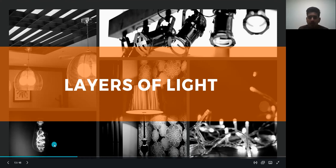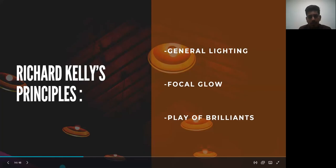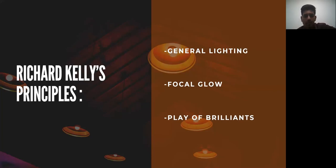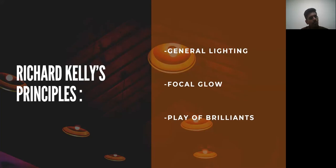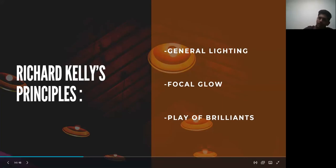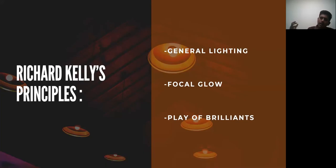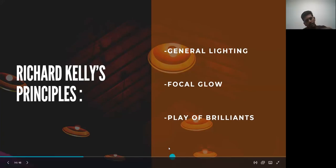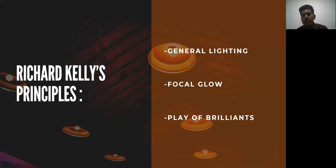Layering is how different hierarchies interact with each other in a given space. For a wall art piece, you might go for a picture light to highlight it. For a texture wall, you might light it from bottom up for a dramatic effect. For tables, a narrow beam spotlight keeps the light contained, creating contrast. Each element is handled differently — that's layering in action.